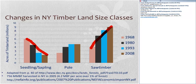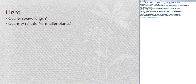This pattern of diminishing acreage of seedlings and saplings and increasing acreage of larger size class trees represents changes happening at a landscape scale across New York, with similar patterns across most of the eastern United States. One of the primary environmental variables that changes when you go from an agricultural landscape to a forested landscape is the amount of light. We can think about light as both quality and quantity, and we'll look at both in more detail.